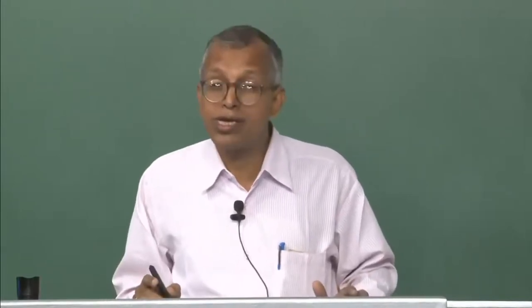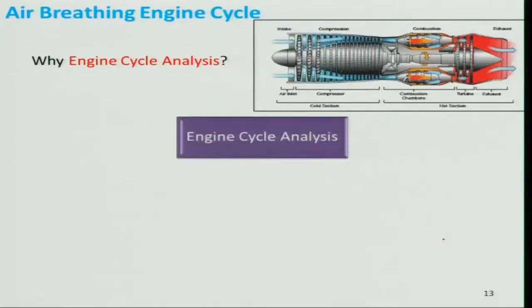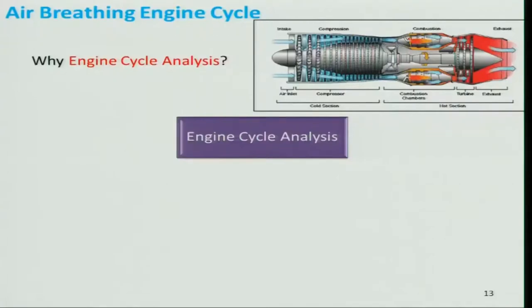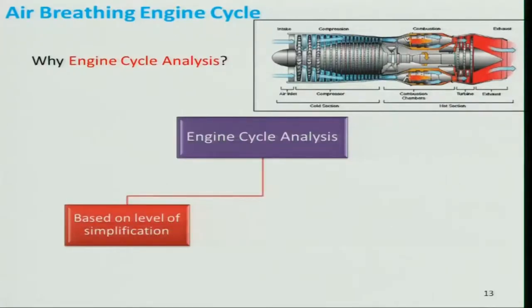Generally, thermodynamic courses only look at thermal efficiency. But here we also need to know what turbine materials can handle, the effect of altitude, the effect of flight velocity — all those things. The fluid undergoes drastic property changes as it passes through compressor, combustion chamber, and turbine — temperature, pressure, and even composition change. This is quite complex to handle.